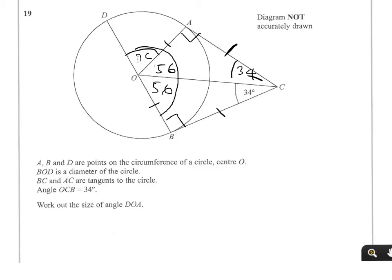56 and 56 is 112. 112 plus the angle we require comes to 180. So if I subtract 112 from 180, I'll get the answer: 68. And that is the missing angle.